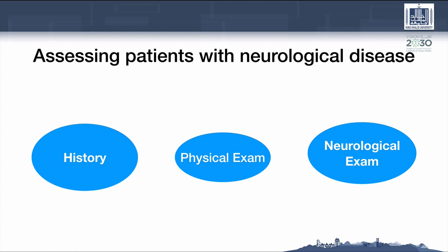It is a history skills. You should take a history first — detailed, appropriate, and organized. Then you will do a general physical examination and then the important thing: the neurological examination.